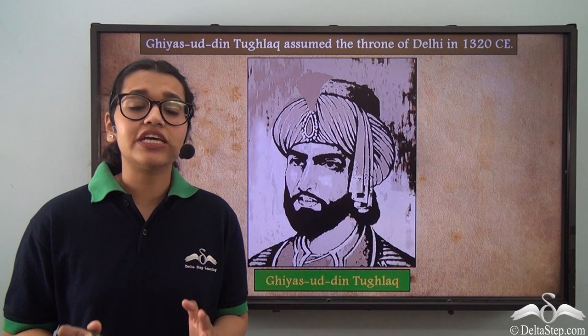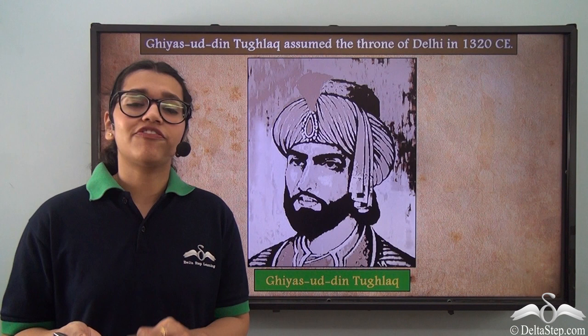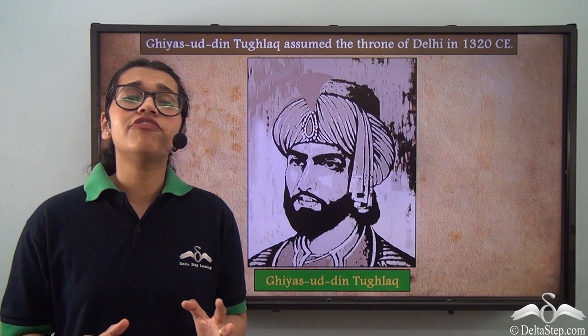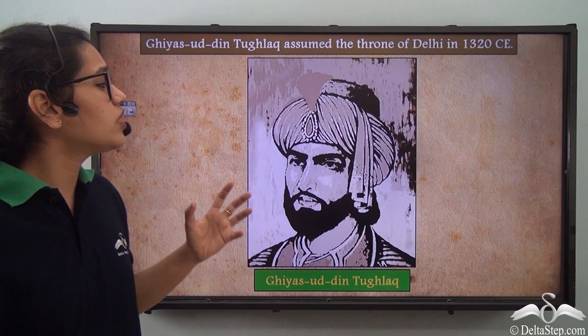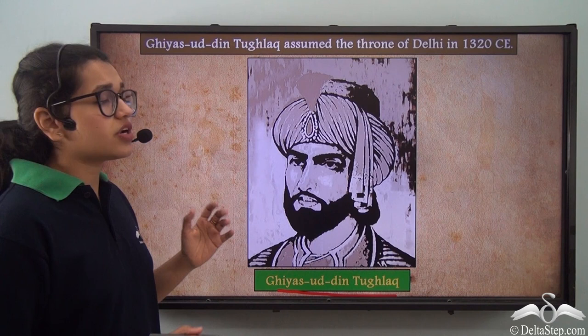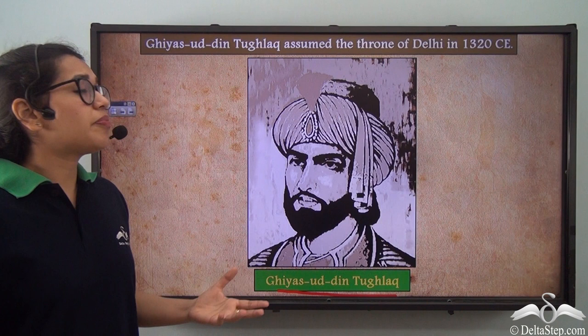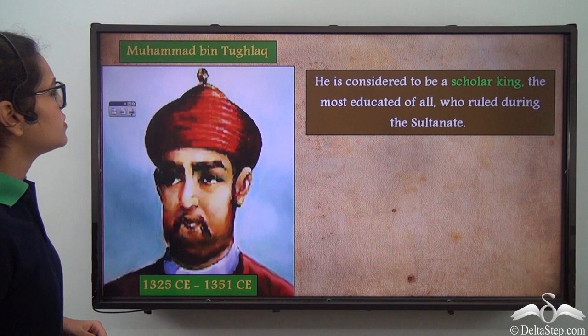The rule of the Khaljis, especially Alauddin Khilji, is of importance in history because of his political stability and administrative efficiency. However, after his death in 1320 CE, we see a fall in the Khilji dynasty. In that very same year, Ghazi Malik, who took the title of Giyasuddin Tughlaq, emerged as ruler and started the Tughlaq dynasty, which was the next dynasty of the Delhi Sultanate.